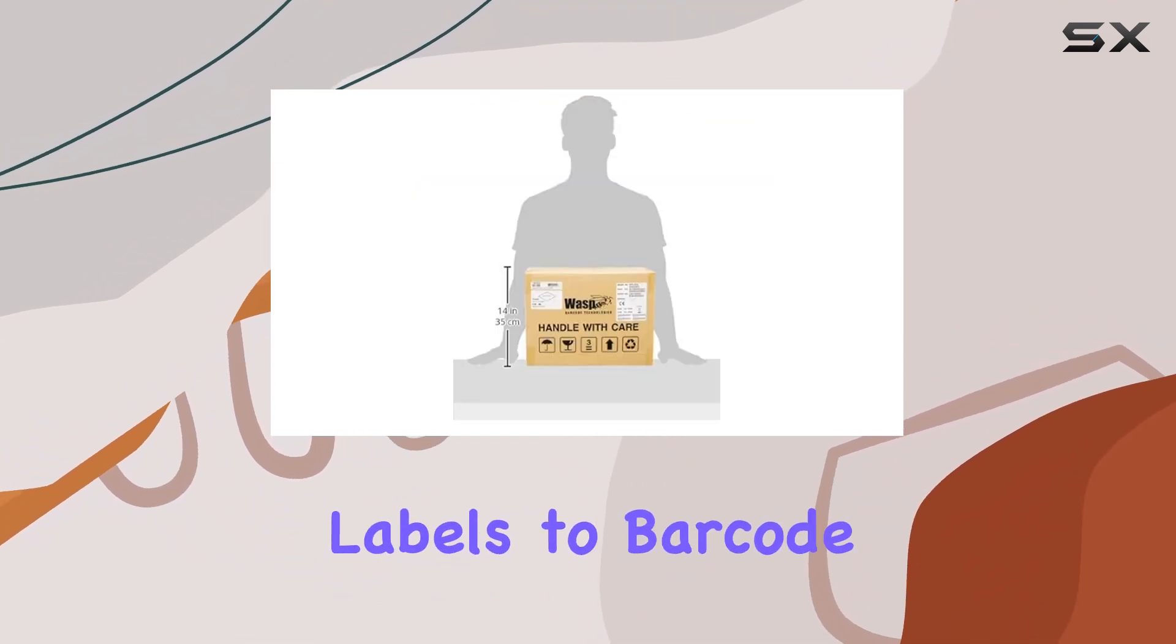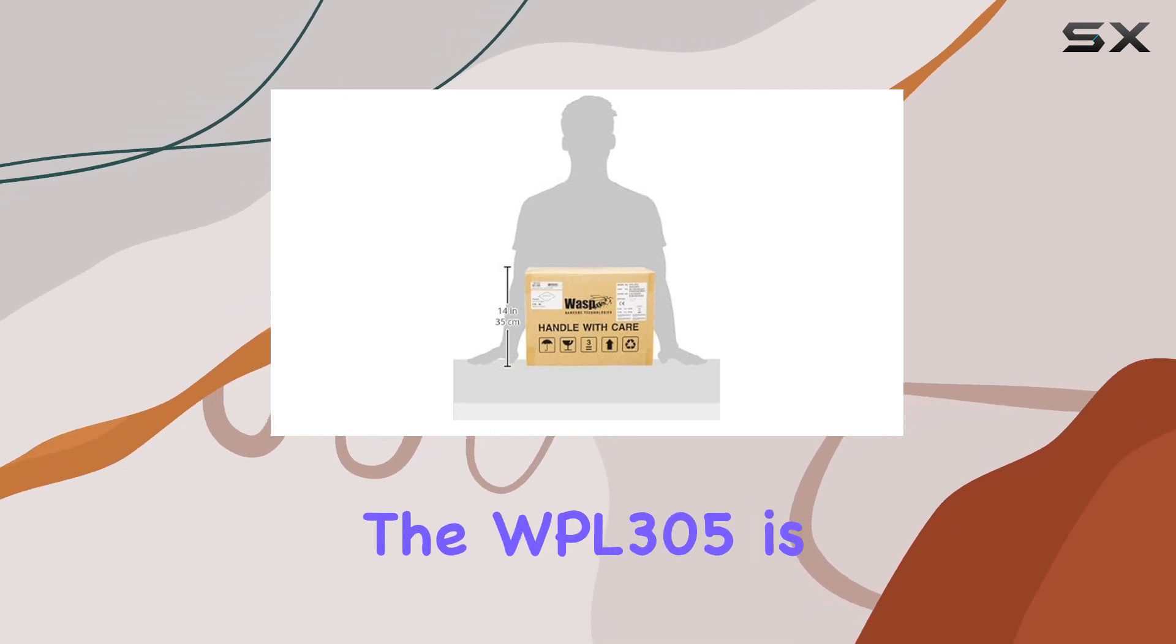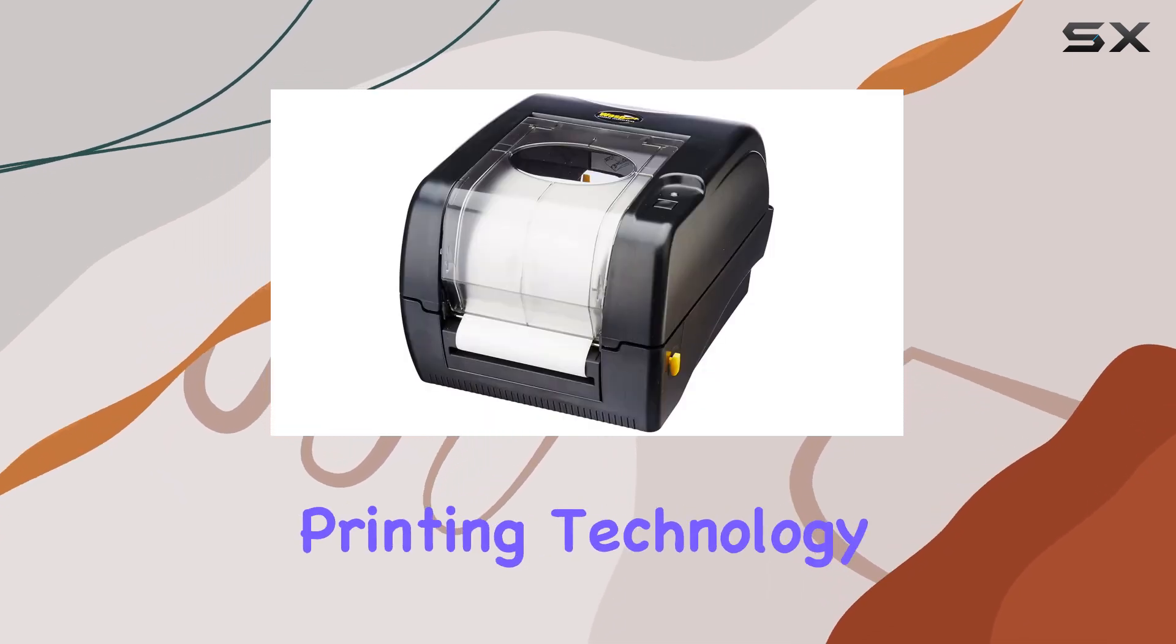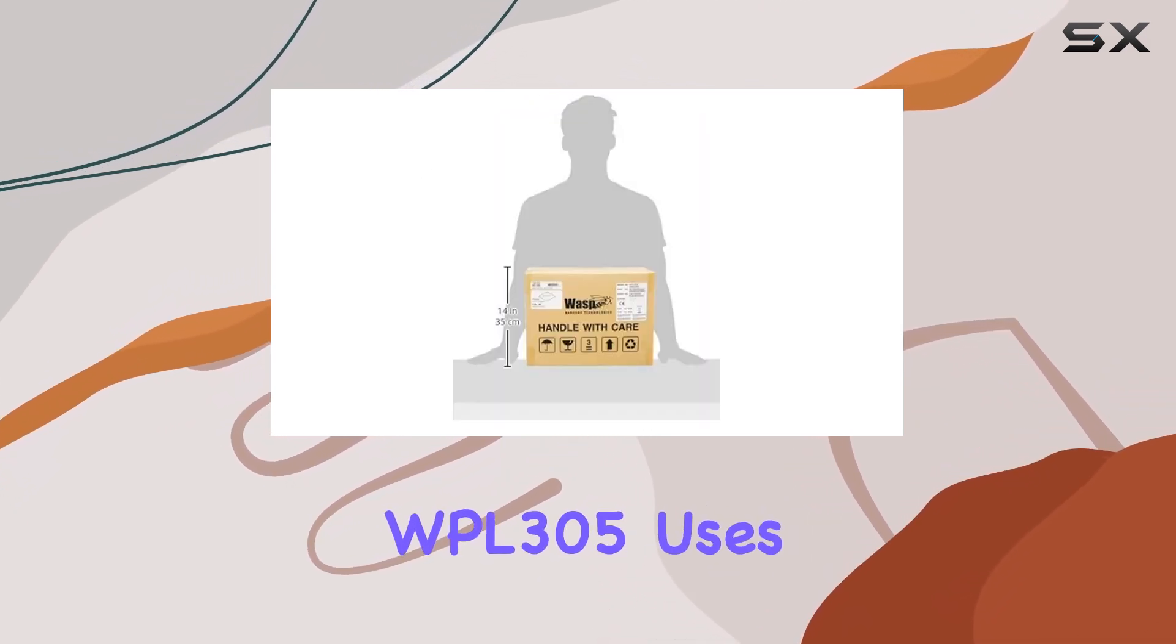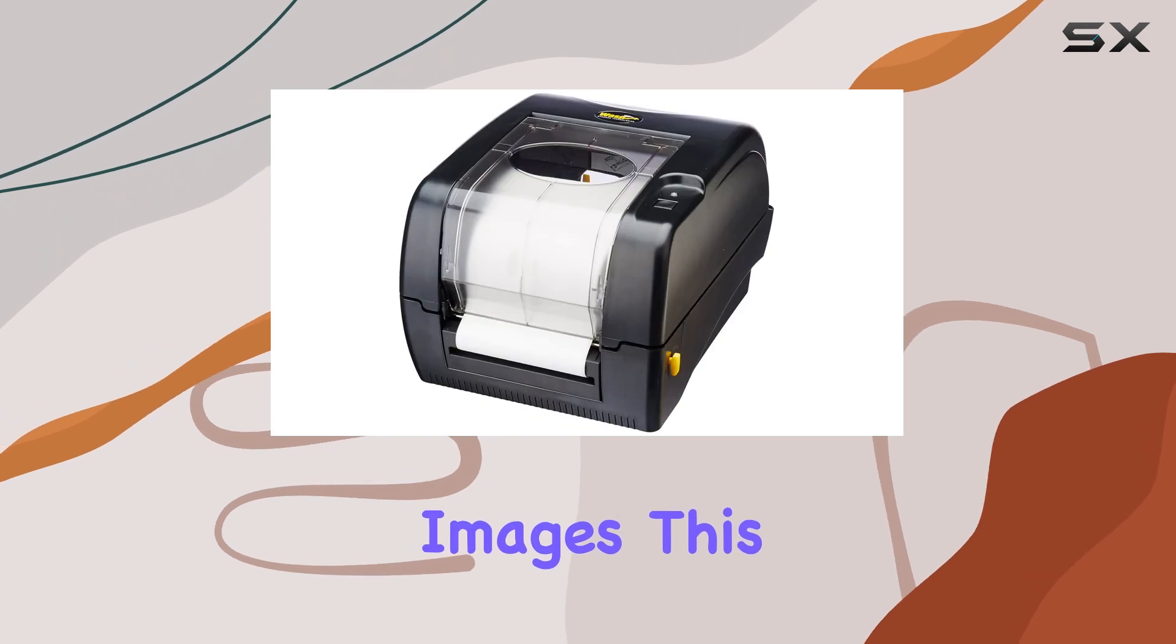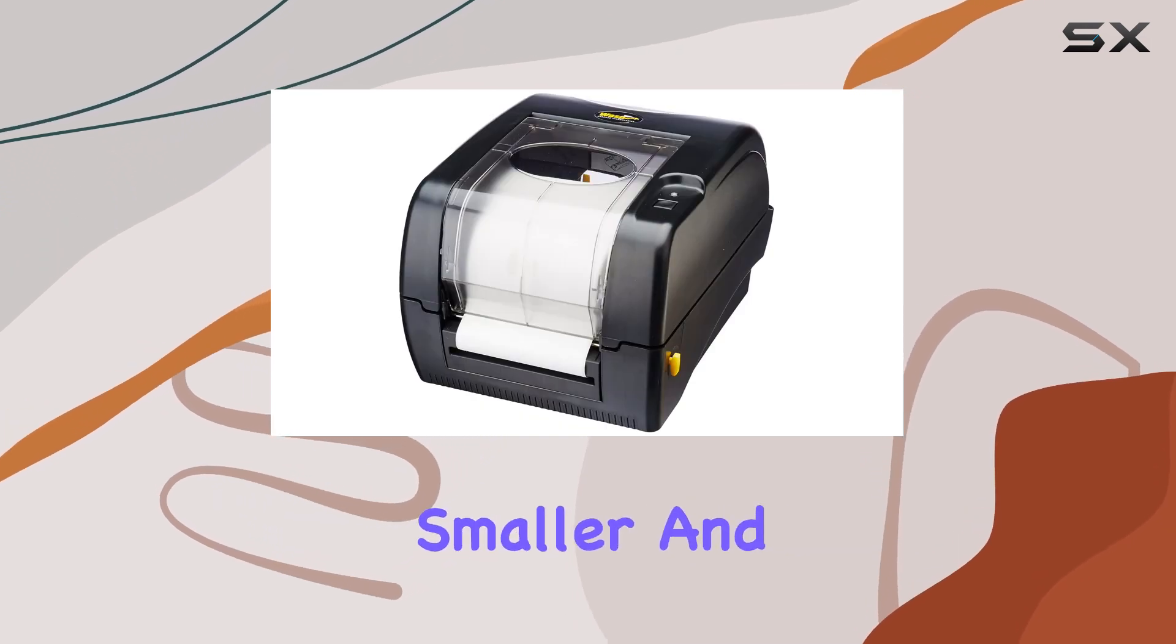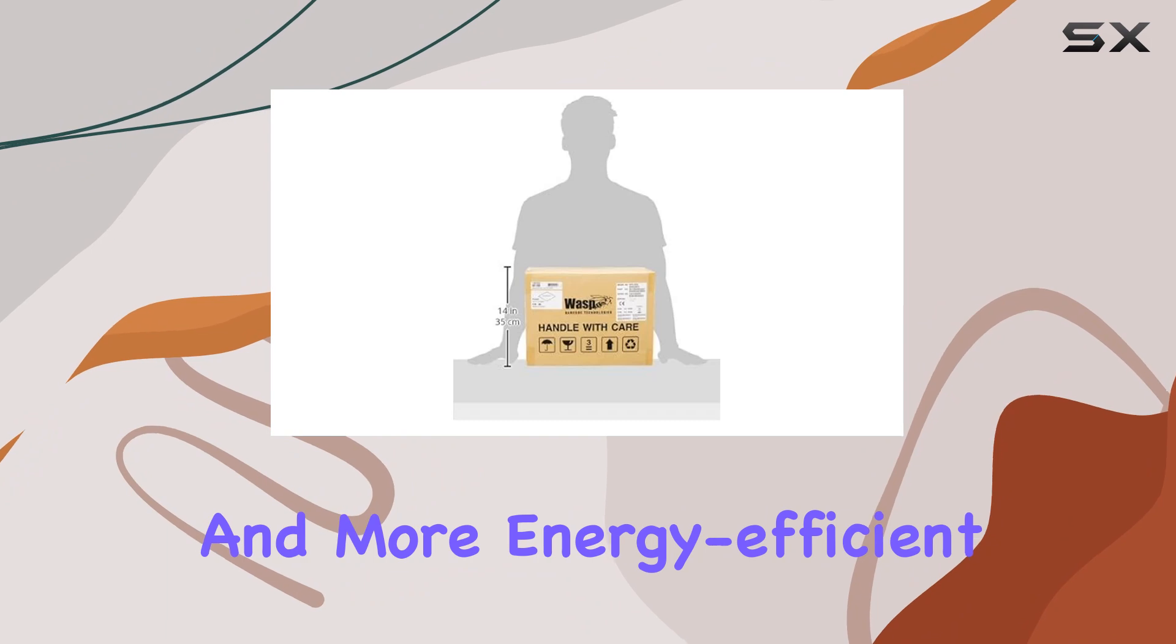One of the standout features of the WPL305 is its direct thermal printing technology. Unlike traditional printers that use ink, the WPL305 uses heat to produce images. This method not only makes the printer smaller and quieter but also faster and more energy-efficient.